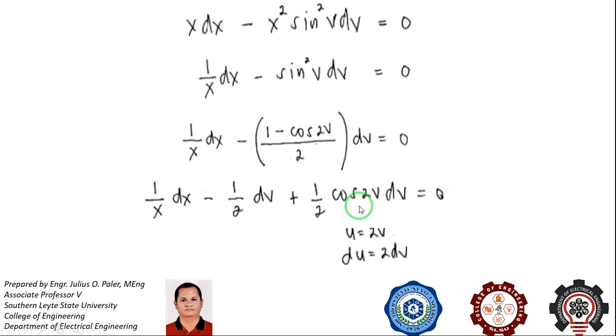In the third term, we will let 2v as our u and our du is 2dv. Since we'll only have v, then we will have a correcting factor of 1 half. Multiplied by 1 half will give us 1 fourth. And the integral of cosine of u du is sine of u.